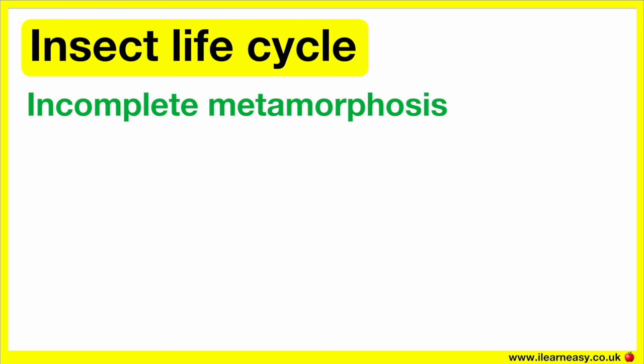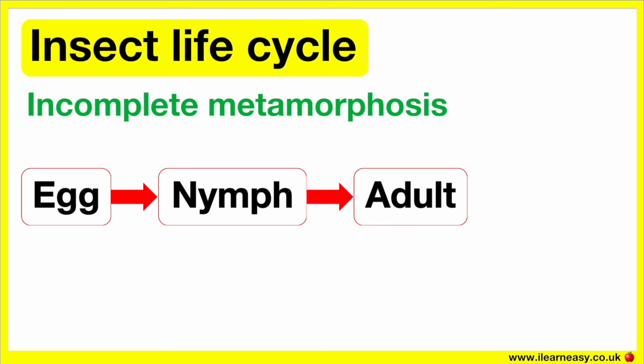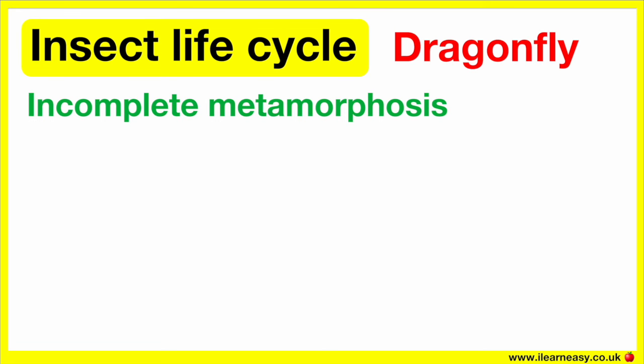Incomplete metamorphosis. The life cycle of a dragonfly is an example of incomplete metamorphosis. This is because the dragonfly in its early stages looks similar to its adult form, but it's much smaller and without wings. First, the female dragonfly lays eggs, which are laid in or near water because they need water to survive. Eggs can also be directly inserted into stalks of plants.